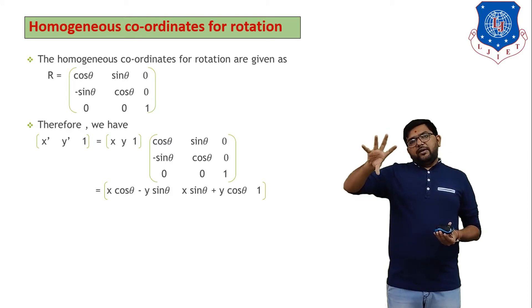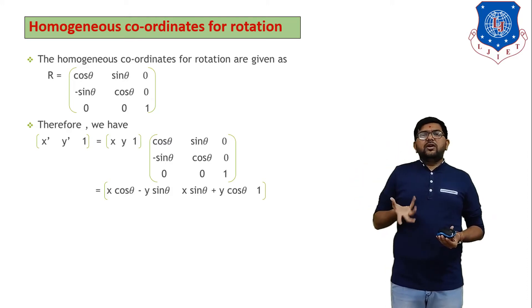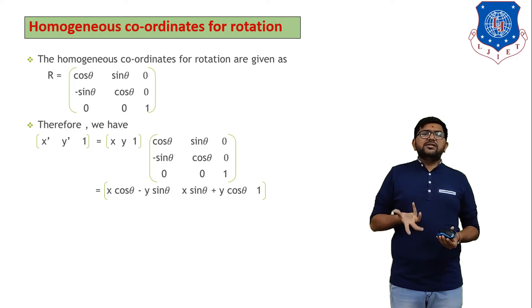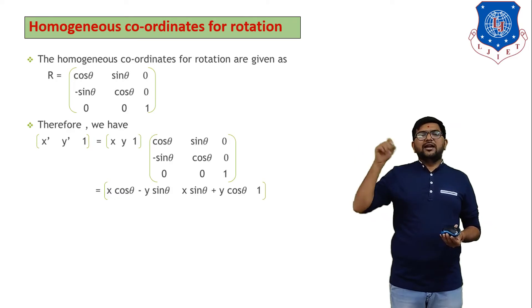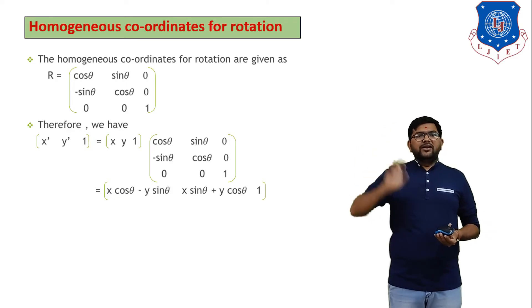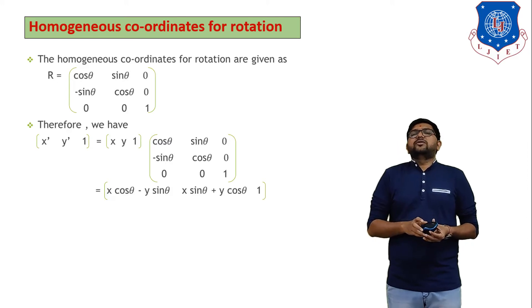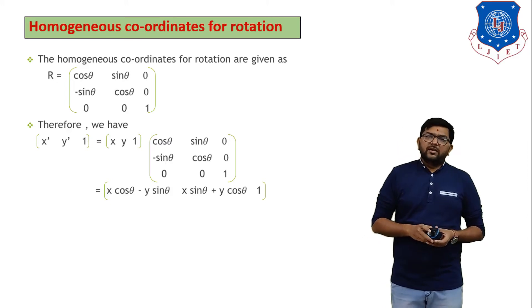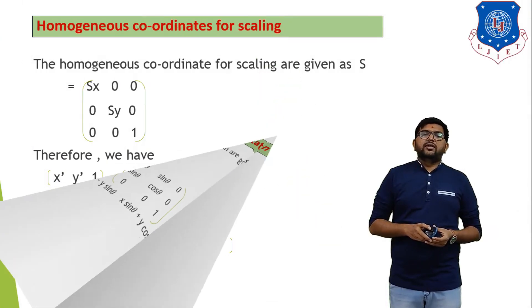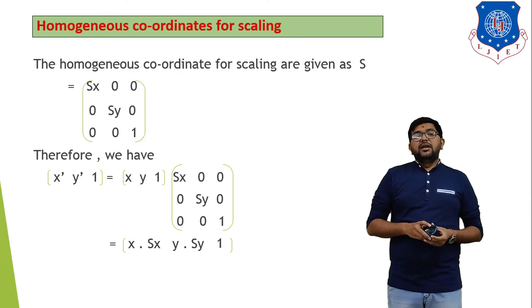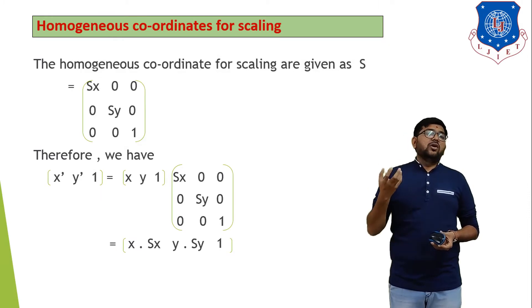If you want to find the equation of clockwise rotation, then you have to just replace θ with −θ in this equation, and you will get the equation for clockwise rotation. This is the homogeneous coordinate for rotation.